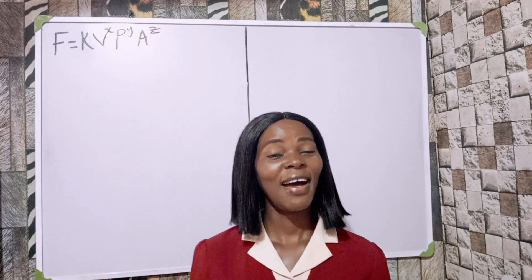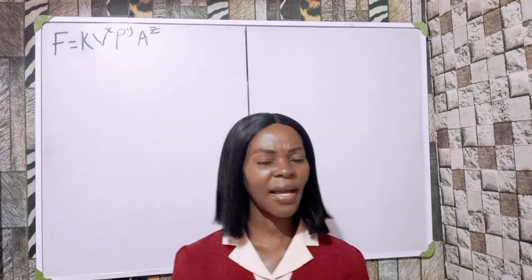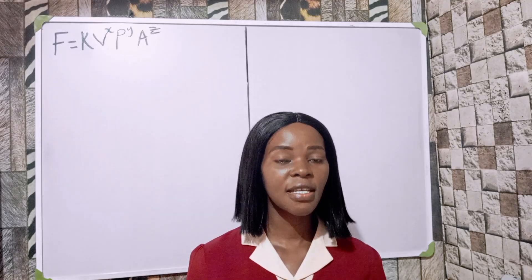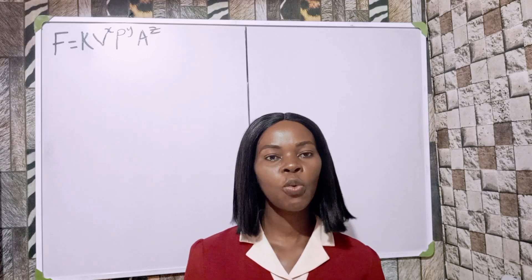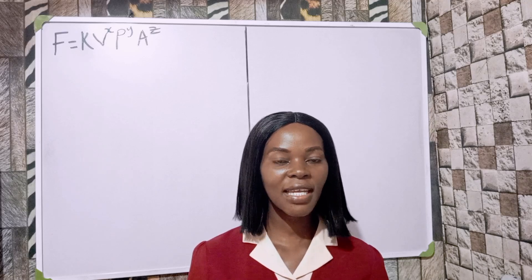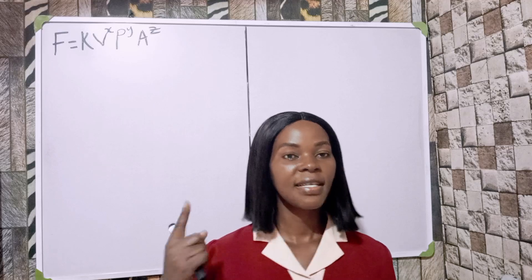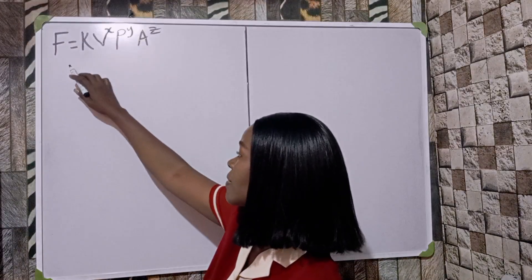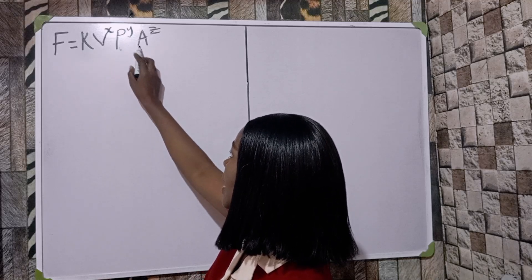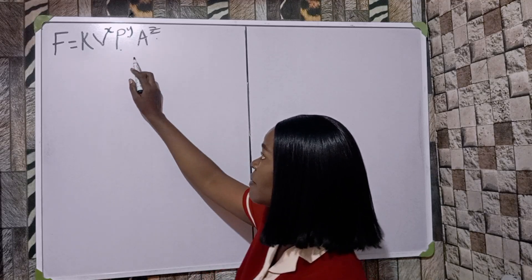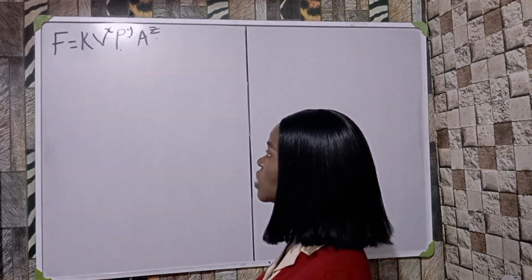If you are watching this channel for the first time, please give it a thumbs up and subscribe for more videos. From this question we are expected to use dimensional analysis to find the values of x, y, and z. We are given F equals k times v to power x, p to power y, and a to power z, and we are asked to find the values of x, y, and z.